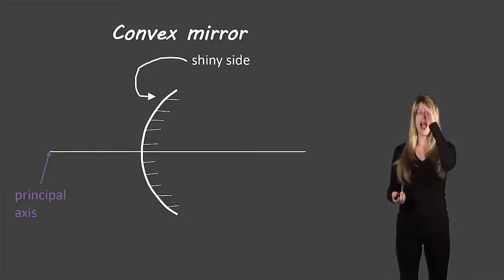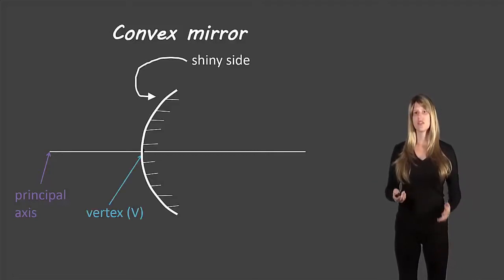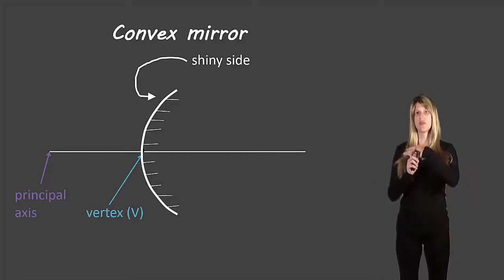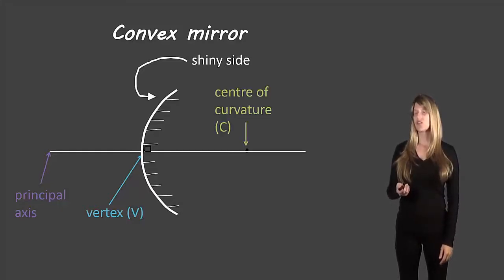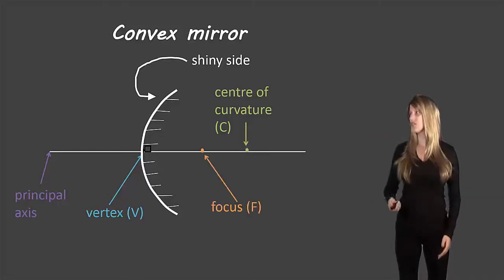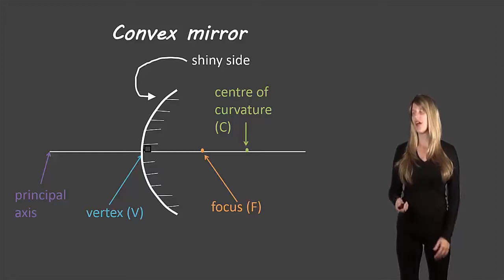Again we have a principal axis imaginary line that would go through the center of that mirror. The vertex the point where the principal axis and the mirror cross at 90 degrees. There's the center of curvature which is the center if that mirror was a full circle. And the focus which is halfway between the center of curvature and the vertex.